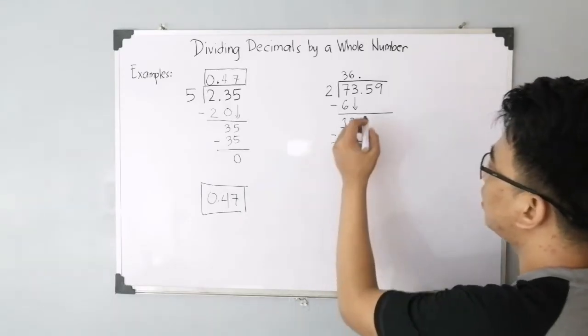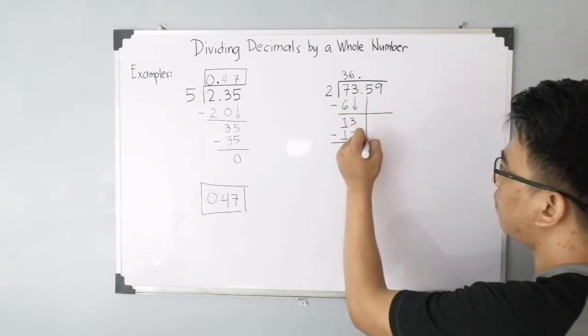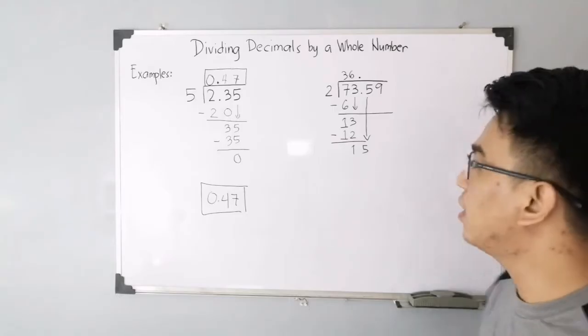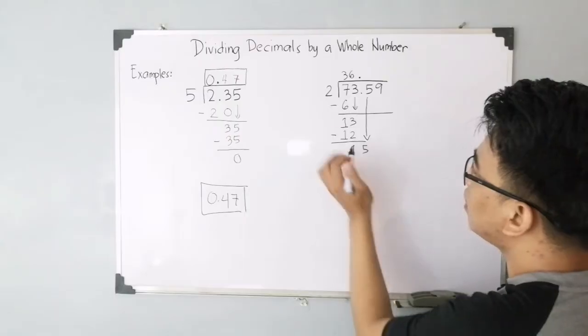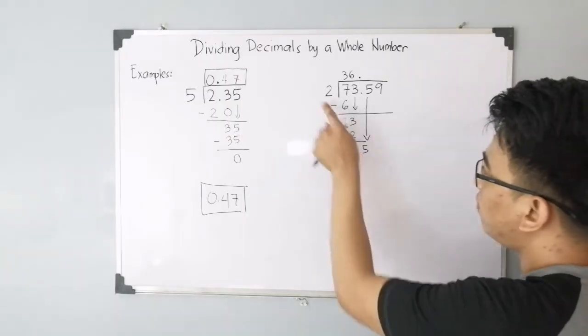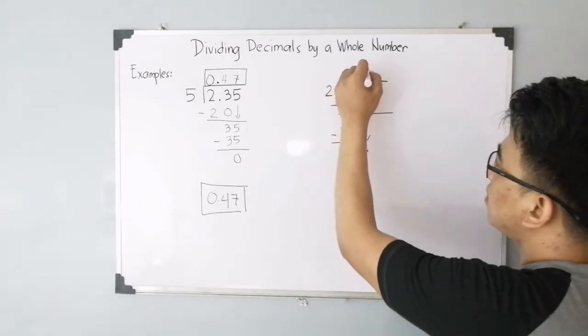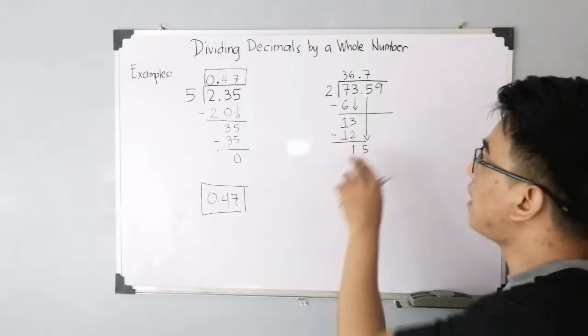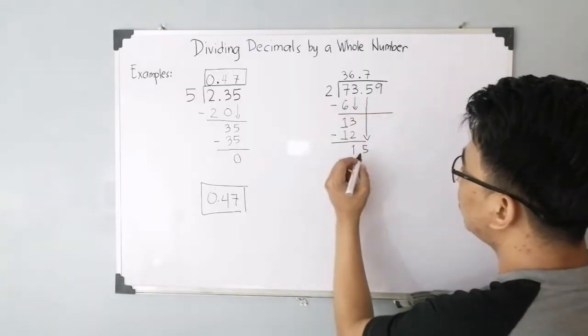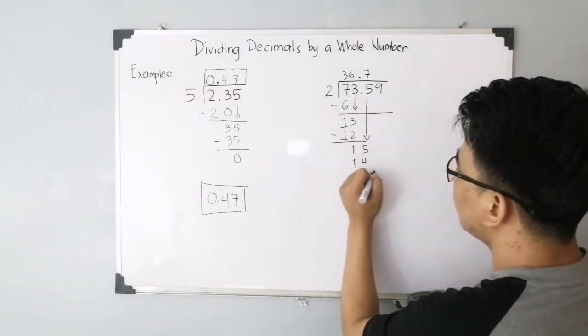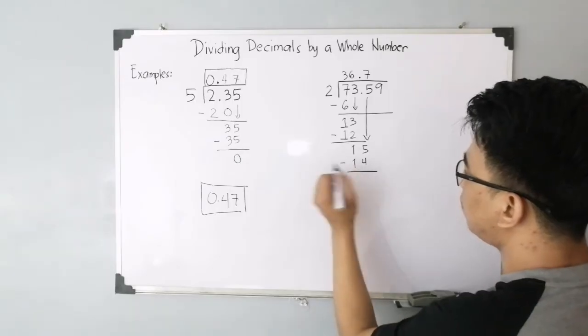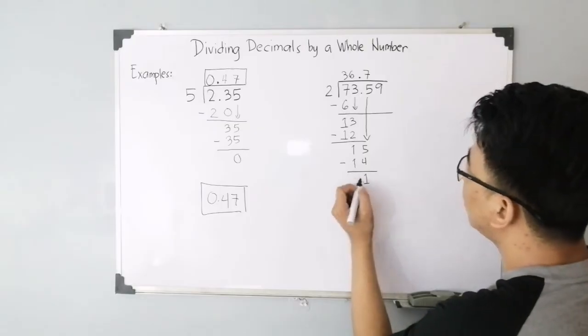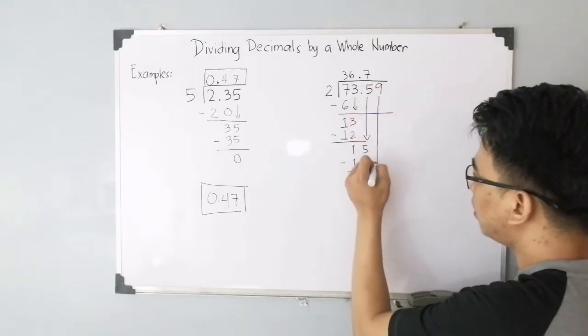And then bring down 5. If you notice, it's the same process repeated until we get the quotient. 15 divided by 2, that is 7. And after dividing, you need to multiply: 7 times 2, that is 14. Subtract the numbers: 15 minus 14, that will give you 1. And then bring down 9.